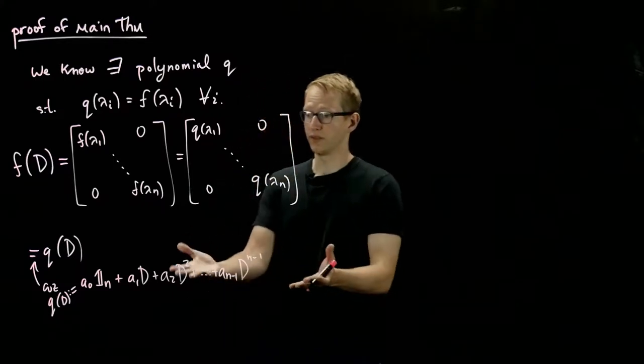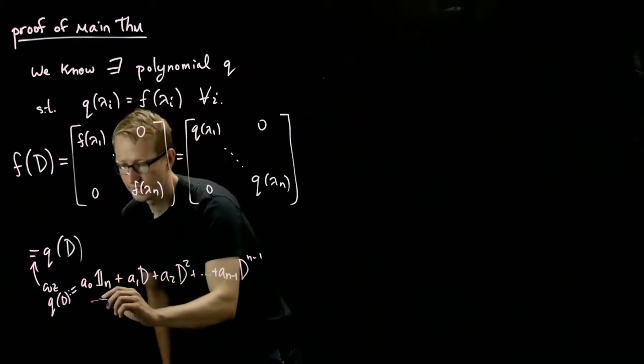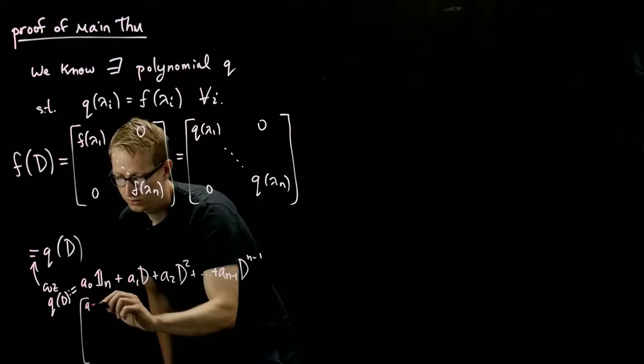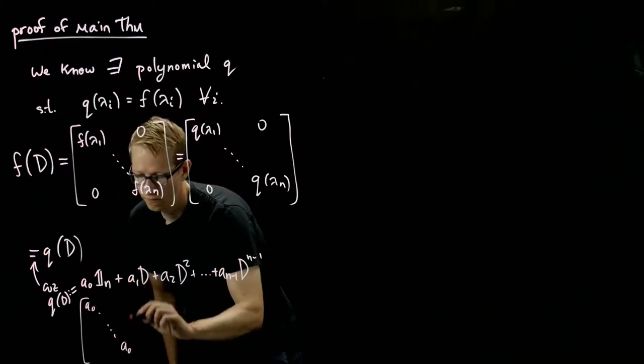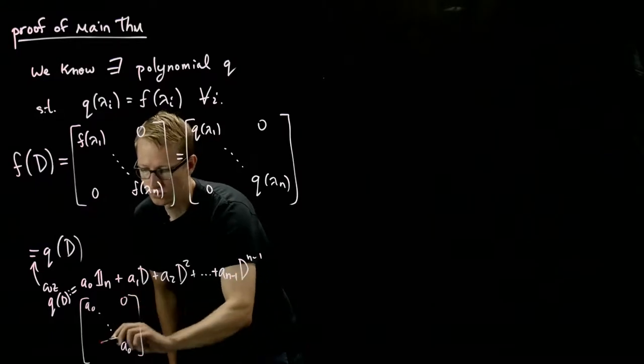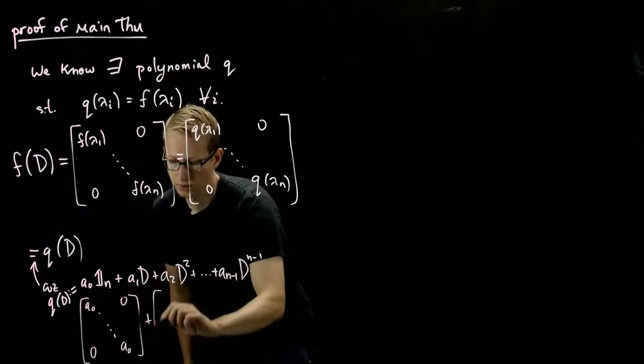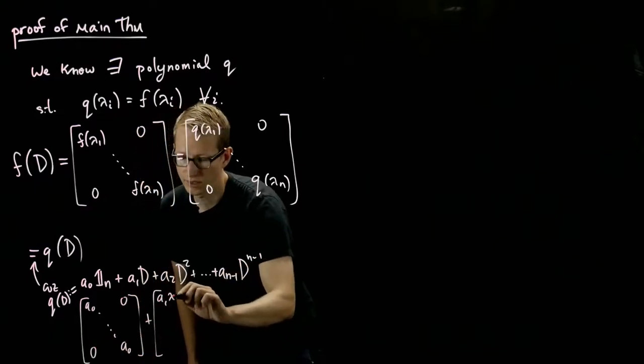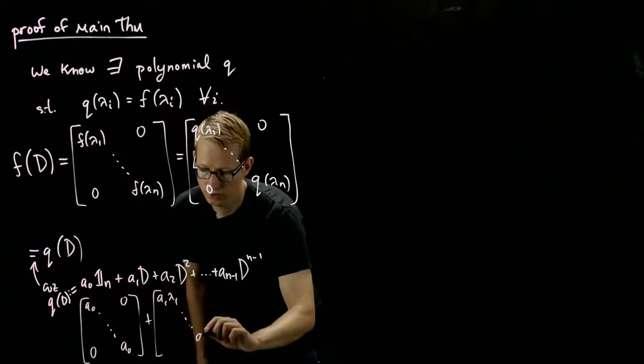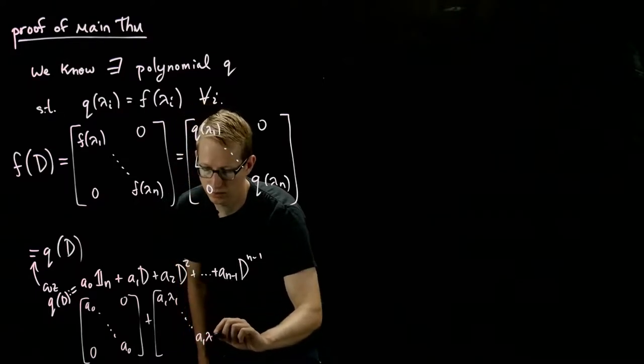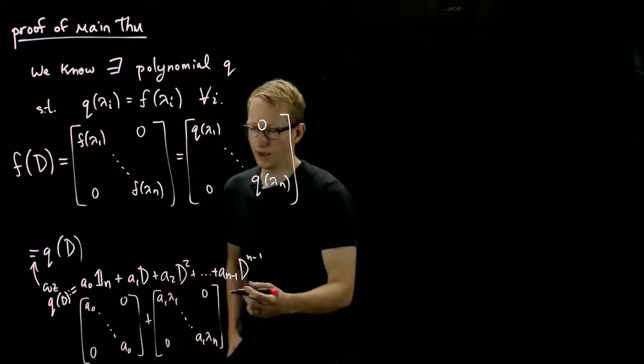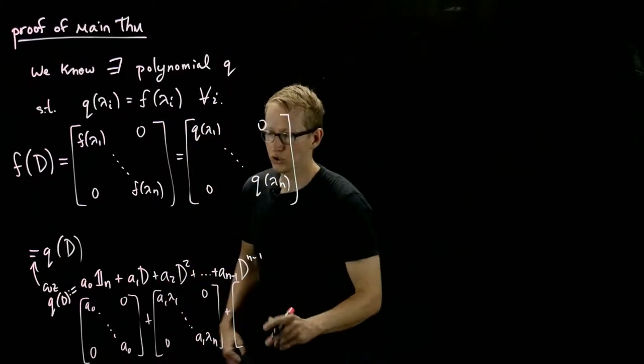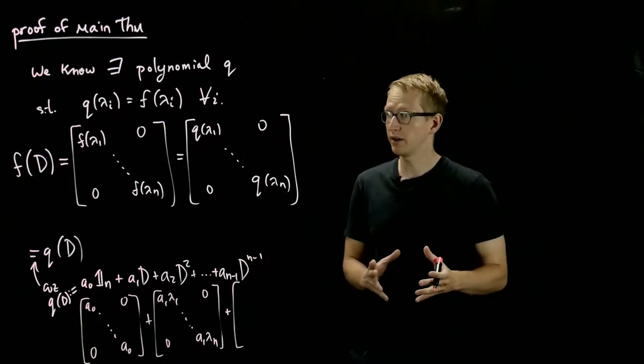And we know what this looks like as a matrix. This is the identity. It looks like A0 all along the diagonals and 0 everywhere else. This is A1 times lambda 1 all the way down to A1 times lambda n.